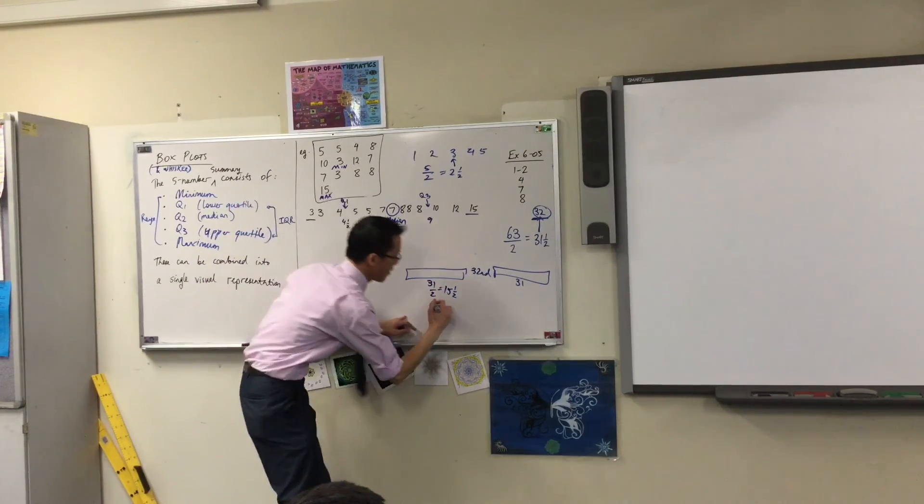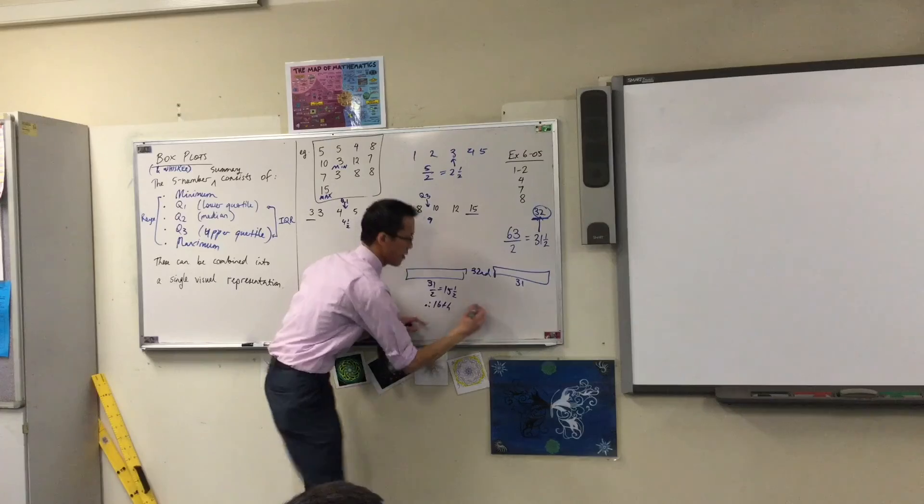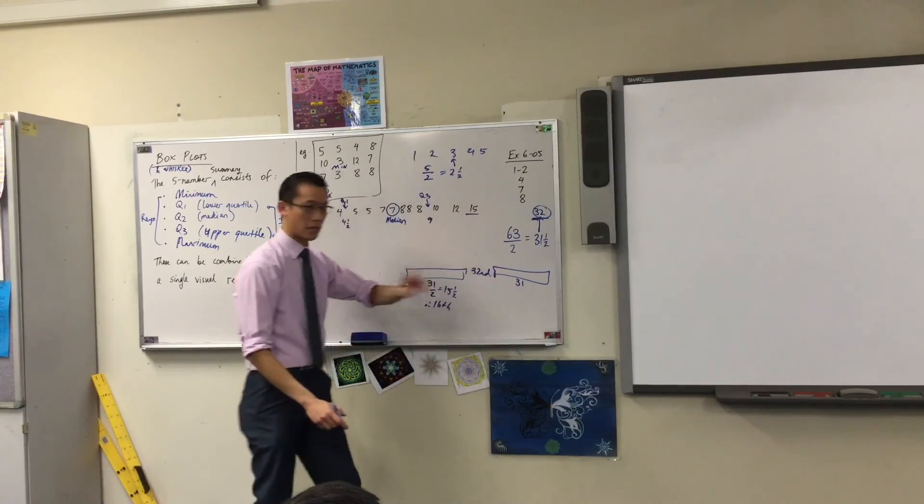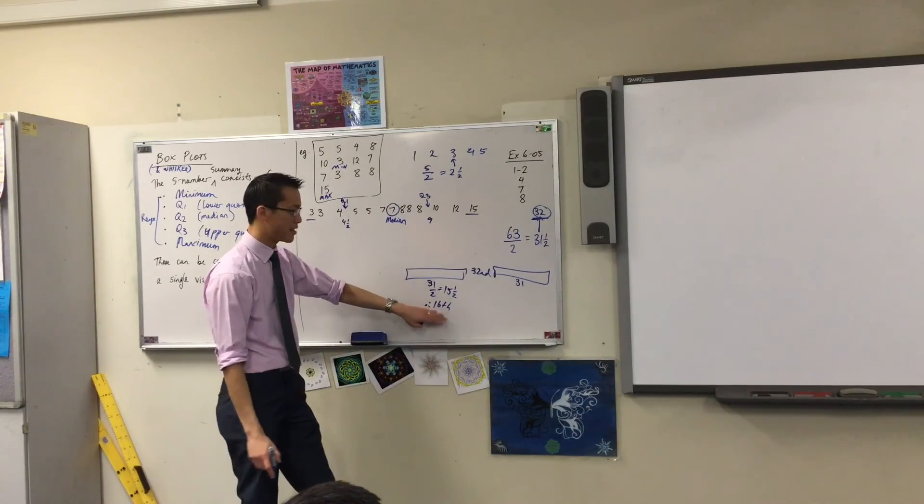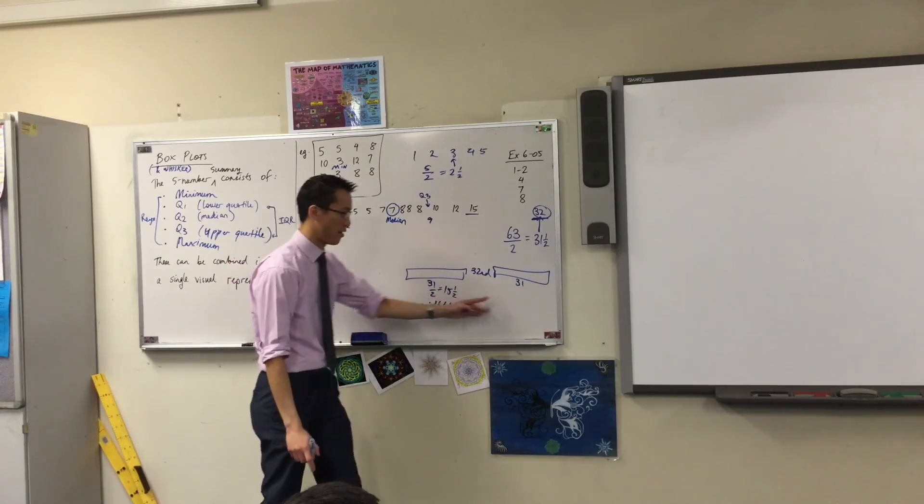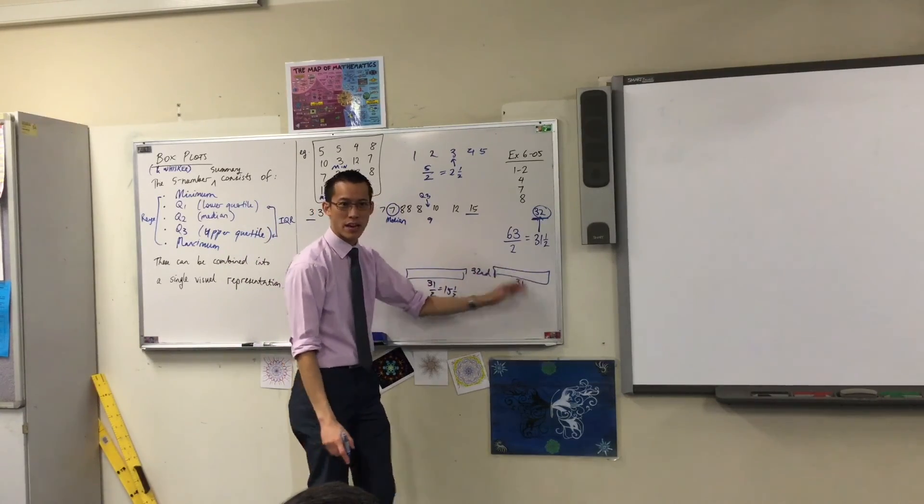So from there, you'd say, therefore, the 16th score. And over here, just be careful, this is the 16th score starting from 1. But now with the 16th score over here, how do I do that?